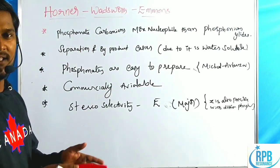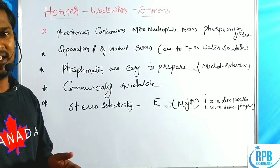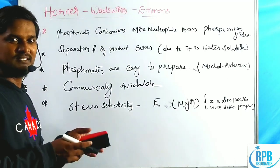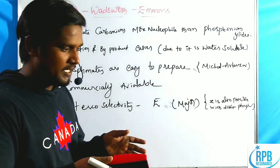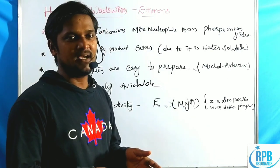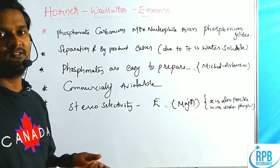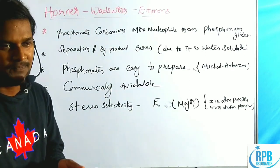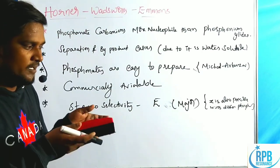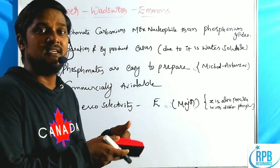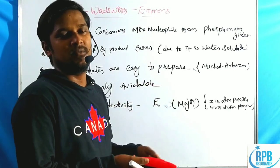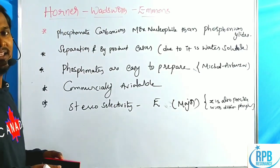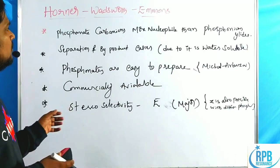Previously we discussed three lectures on Wittig reactions. The first two are Wittig reactions. The 7th reaction is the Wittig-closure reaction, where non-stabilized ylides give the E isomer as the major product.